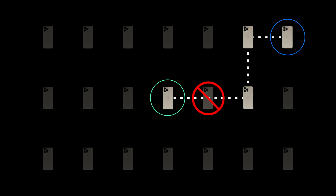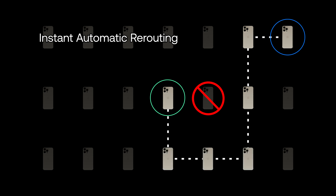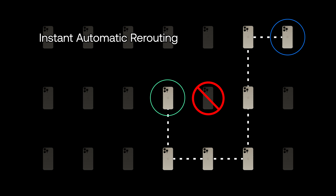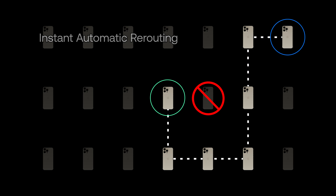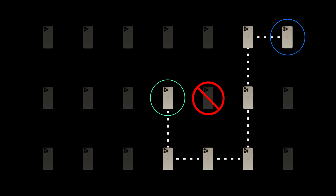Suppose an intermediate peer is unavailable, such as leaving the mesh or entering airplane mode. In that case, the presence graph helps update another route, similar to rerouting behaviour in apps like Google or Apple Maps. This way, multi-hop links can always reform and recalculate as devices enter and leave.